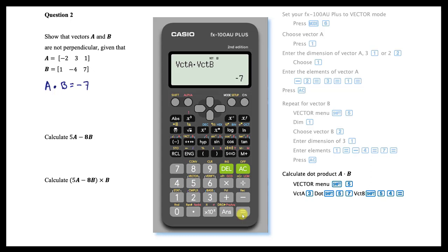The result, minus 7, indicates that the dot product of the two vectors is not equal to 0, and hence the two vectors are not perpendicular.